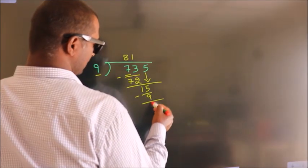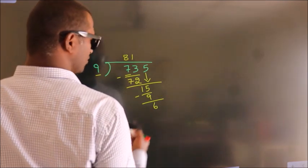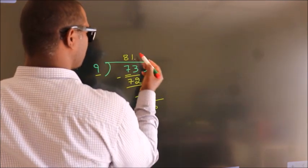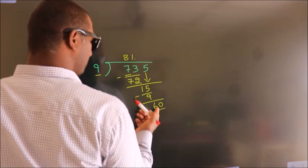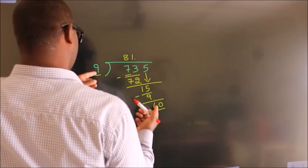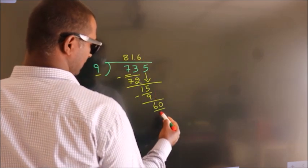After this, there are no more numbers to bring down. So what we do is put a decimal point and take 0. So we have 60. A number close to 60 in the 9 table is 9 times 6, which is 54.